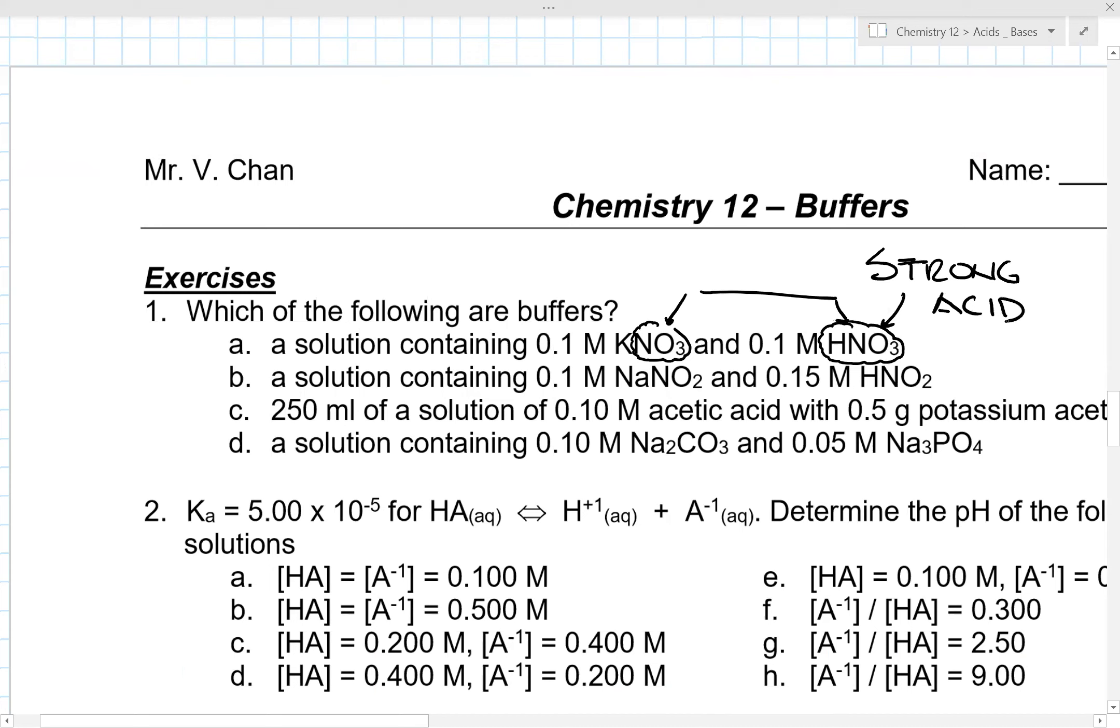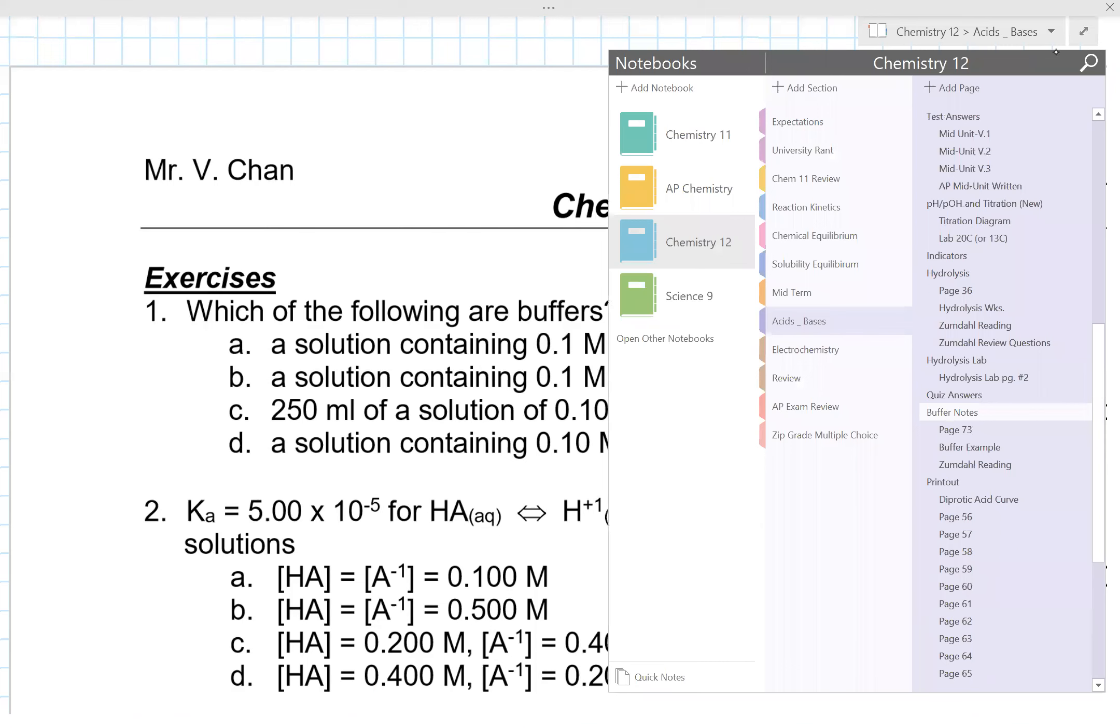Now, why is D a no is because sodium carbonate and sodium phosphate are not conjugate pairs. So something as simple as that is, do you understand what the definition of an acid or base is?